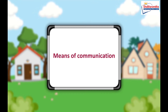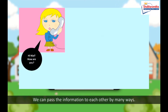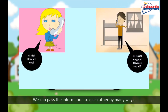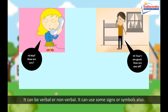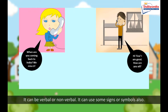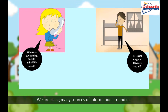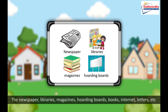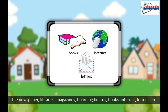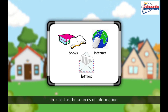Means of communication. We can pass information to each other in many ways. It can be verbal or non-verbal. It can also use some signs or symbols. We are using many sources of information around us. The newspaper, libraries, magazines, hoarding boards, books, internet, letters, etc. are used as the sources of information.